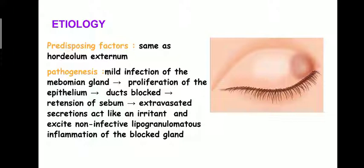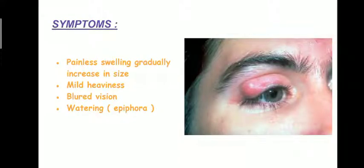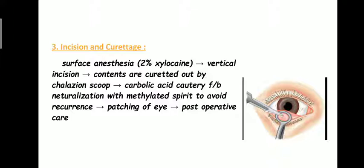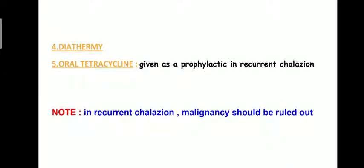We have seen the predisposing factors and pathogenesis of chalazion. The characteristic symptom is painless swelling which gradually increases in size. Treatment options include conservative management, intralesional steroids, incision and curettage, diathermy, and oral tetracycline as prophylaxis in recurrent chalazion.